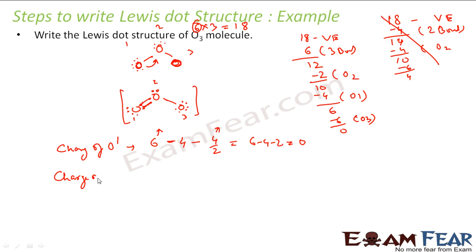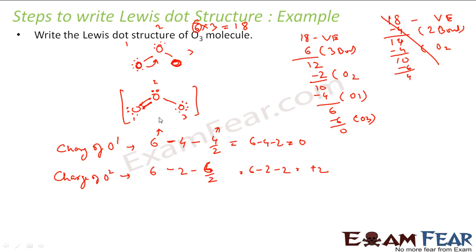Now let us talk about the charge on oxygen number 2. 6 is the number of valence electrons oxygen has in the free state. Minus 2 electrons it has as lone pairs. It has 6 shared electrons — that is 1 double bond plus 1 single bond — so the contribution is 6 by 2, which is 3. This becomes 6 minus 2 minus 3, that is plus 1. So this central atom has got plus 1 charge.